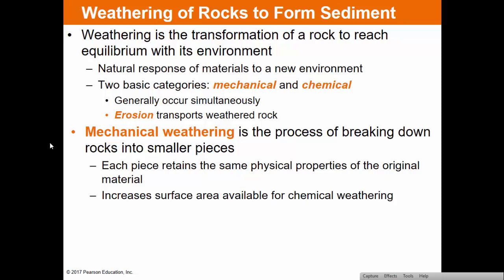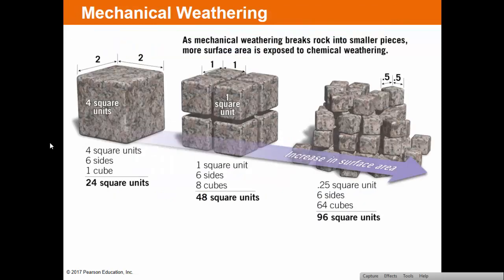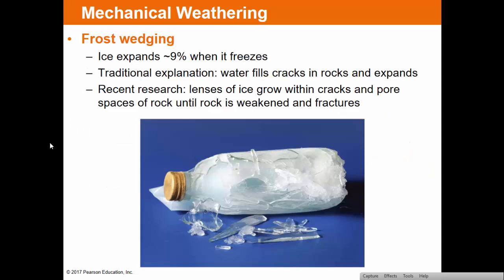Mechanical weathering helps by creating more surface area for chemical weathering, and chemical weathering weakens rock surfaces for mechanical weathering. Once rocks are broken down, erosion moves the weathered material away and deposits it as sediment. Mechanical weathering is the process of breaking rocks into smaller pieces while retaining the same physical properties. For example, cutting one rock into eight smaller pieces increases surface area from 24 to 48 square units — giving chemical weathering more area to work on.